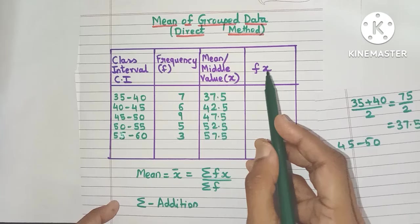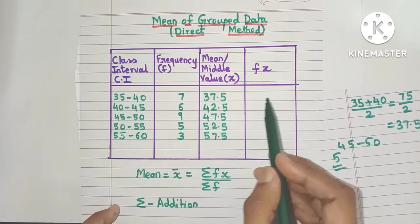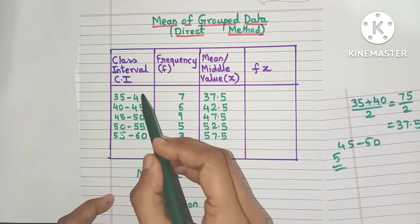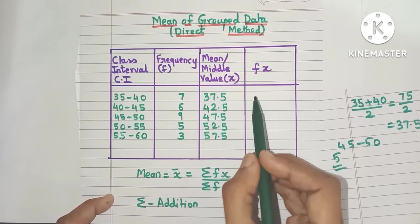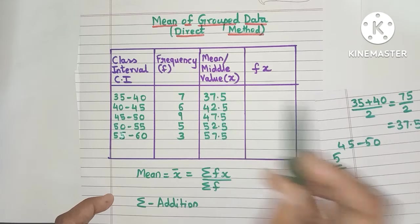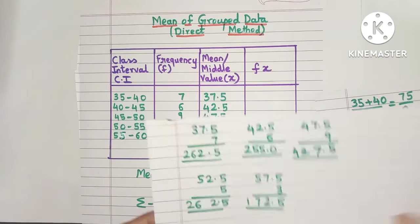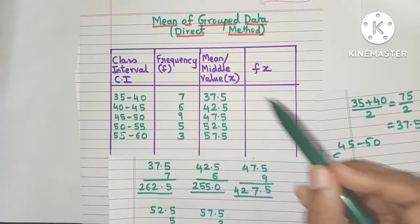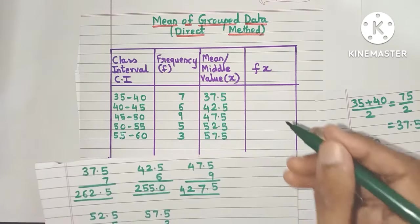Now we need to add one more column called the fx column. In this column, we simply multiply the f value and the x value for all the class intervals. For the first class interval, I will multiply 7 and 37.5. To save time, I have already done all the calculations. Let's quickly note it down.